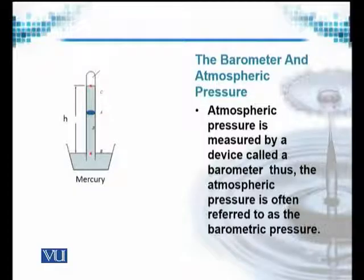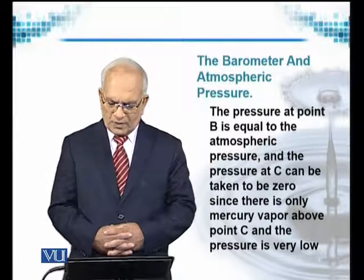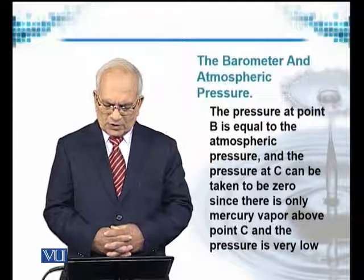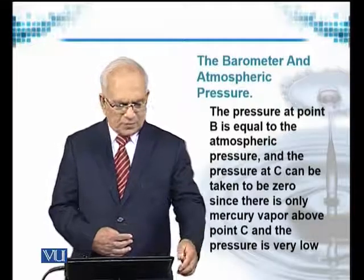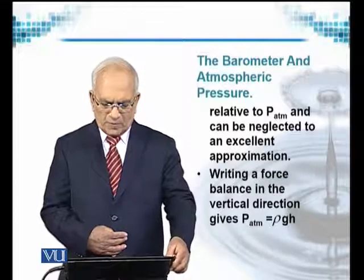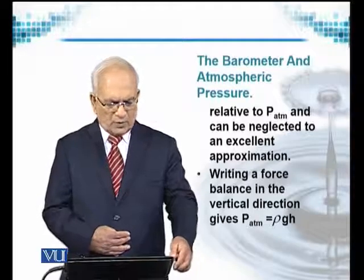Barometric pressure is the same thing as atmospheric pressure. A barometer is a simple tube, as you can see in the picture. The pressure at point B is equal to the atmospheric pressure, and the pressure at point C can be taken to be zero, since there is no mercury vapor above point C and the pressure is very low relative to atmospheric pressure — it can be neglected to an excellent approximation.